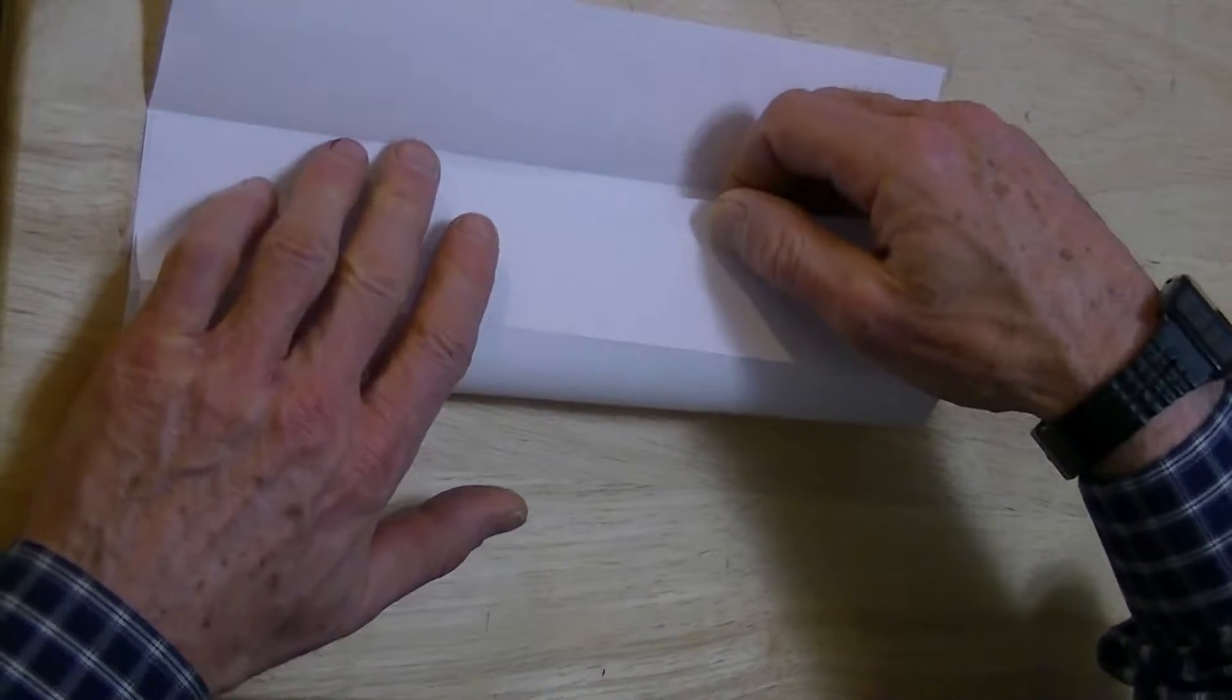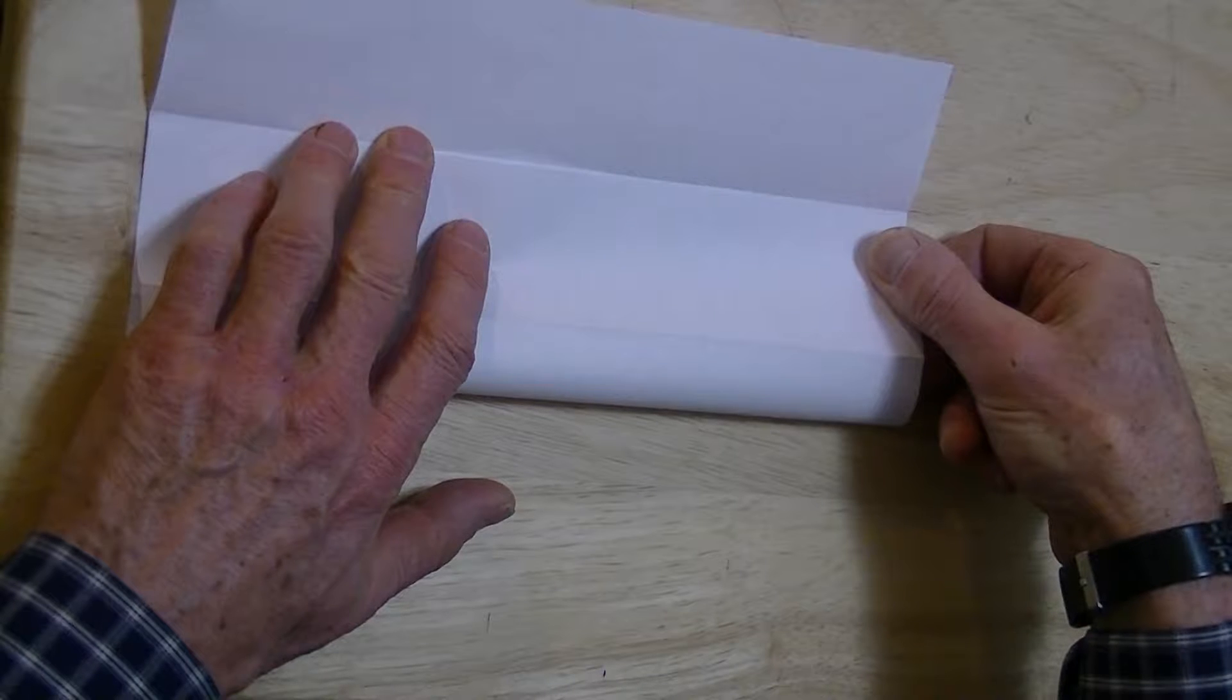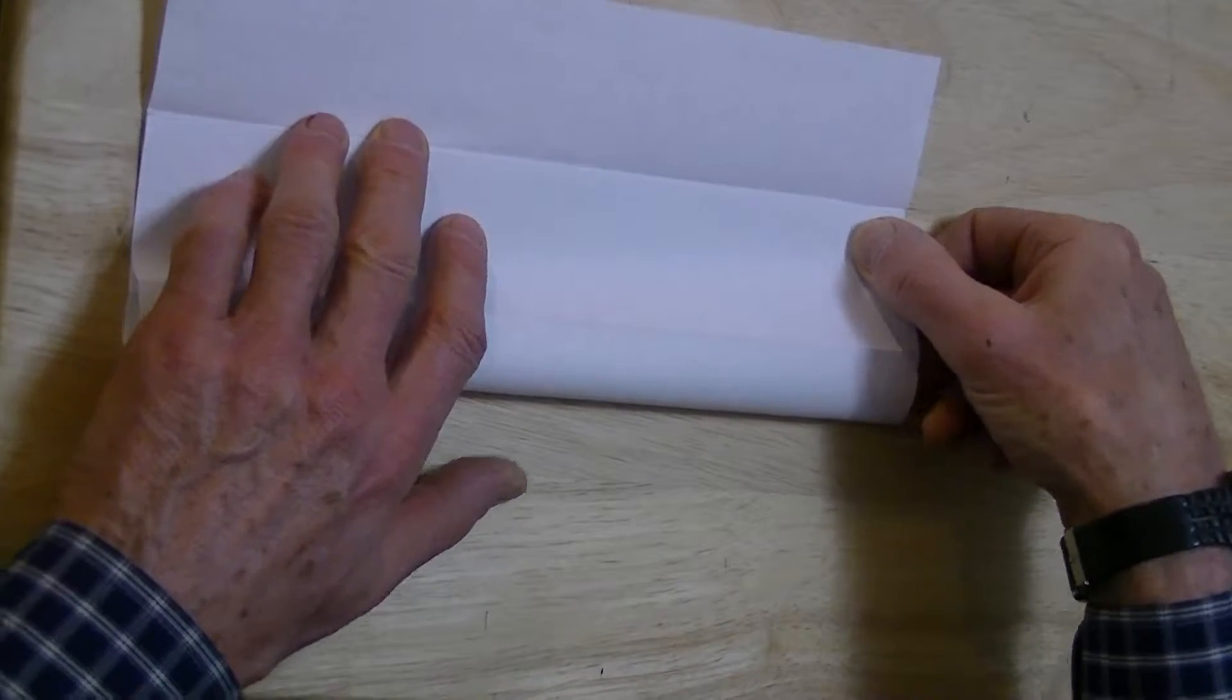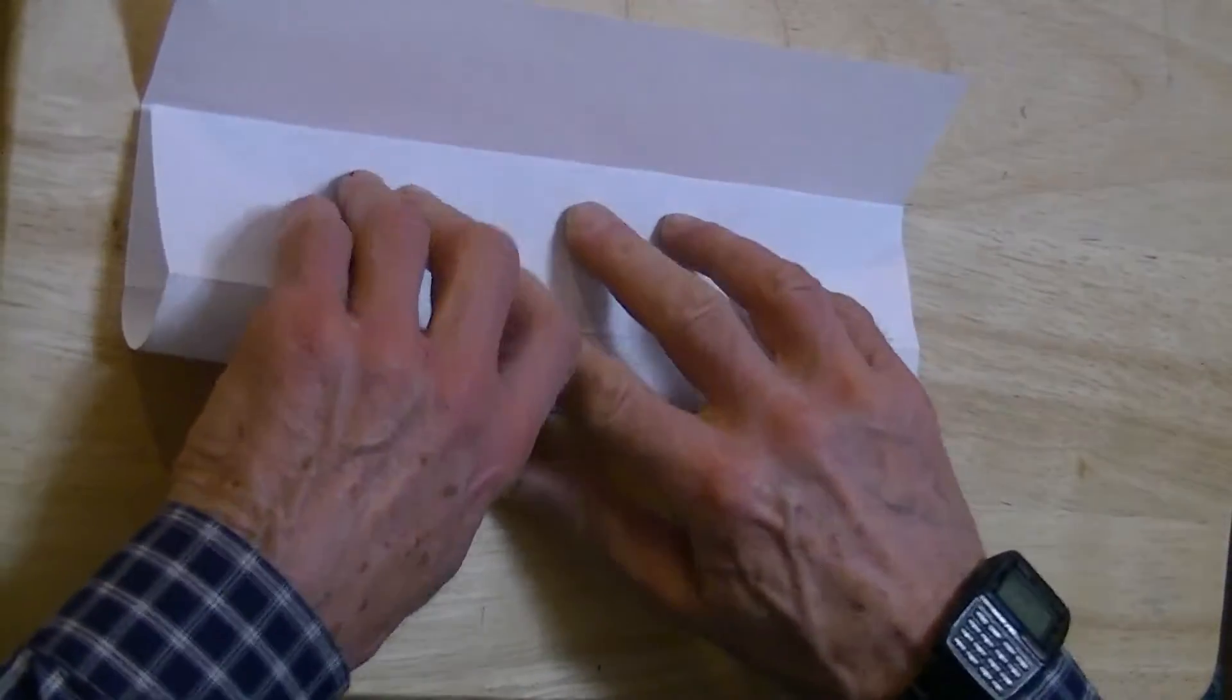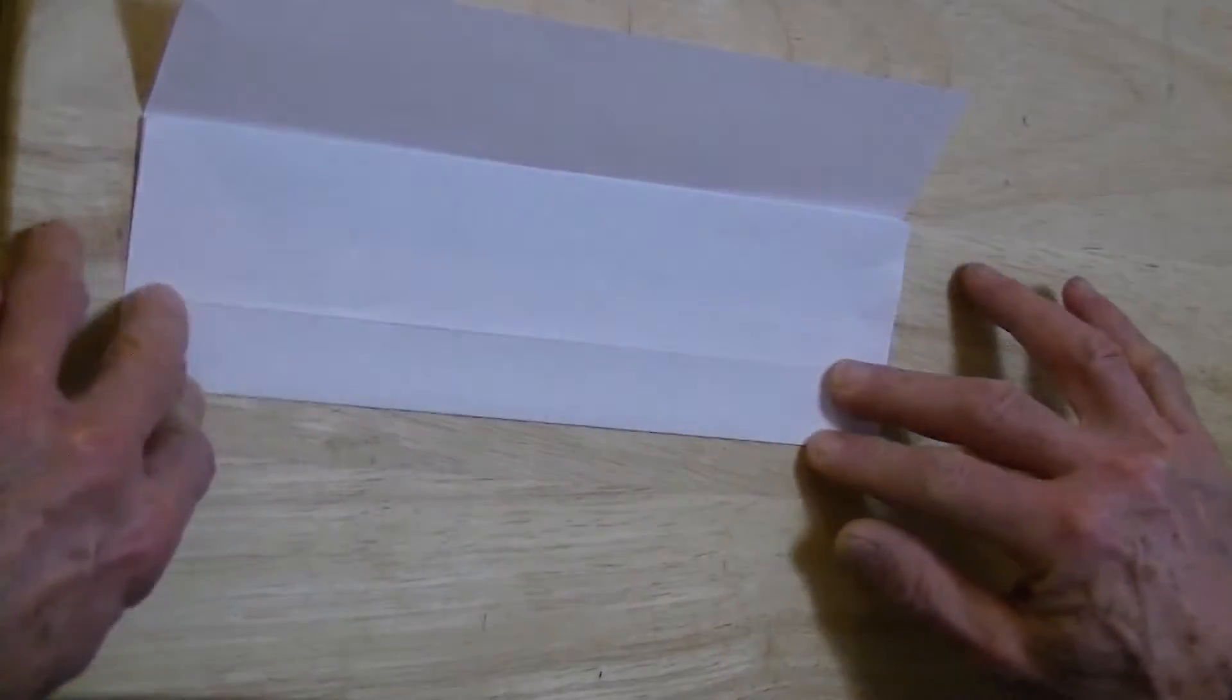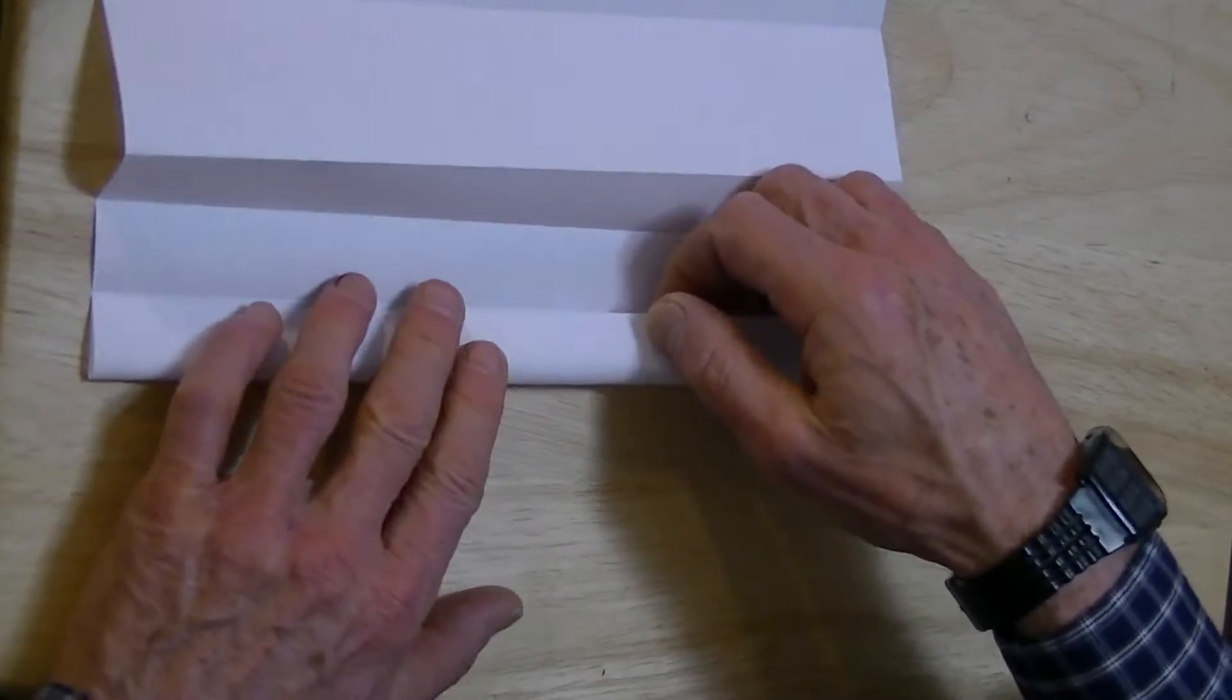And we fold to the quarter crease on the opposite side. Or, if you want to think of it that way, the three-quarter crease. So, we're actually going to get eighths. And then we fold to the near quarter crease to get that eighth.